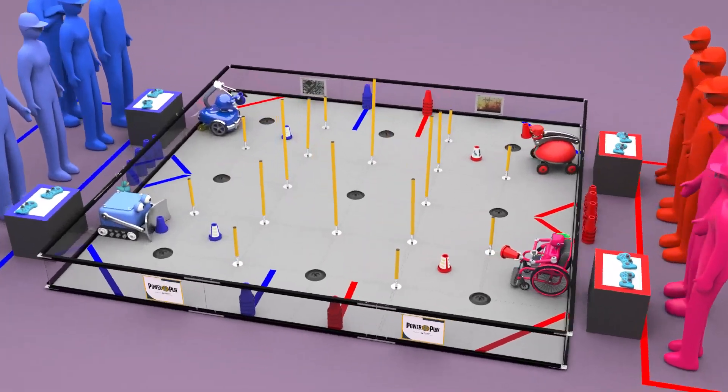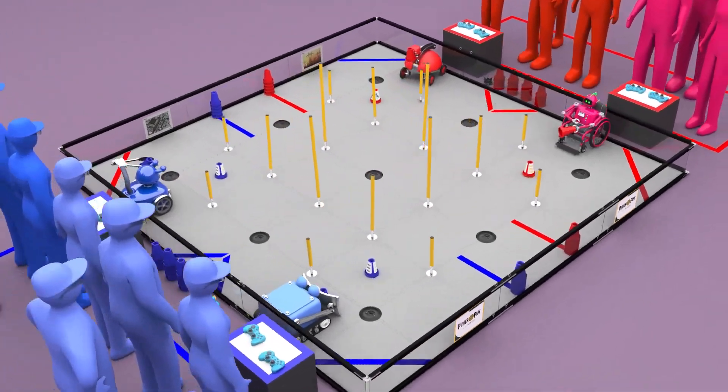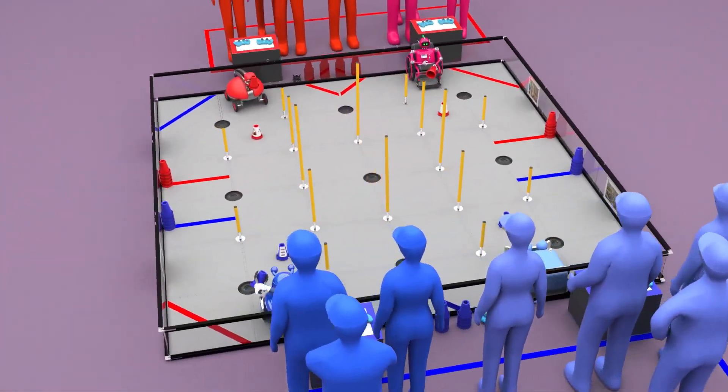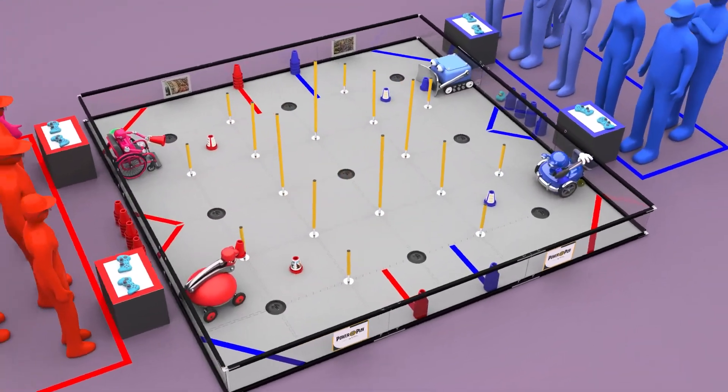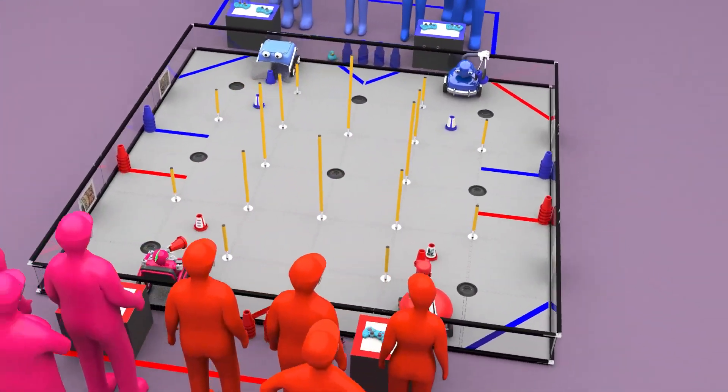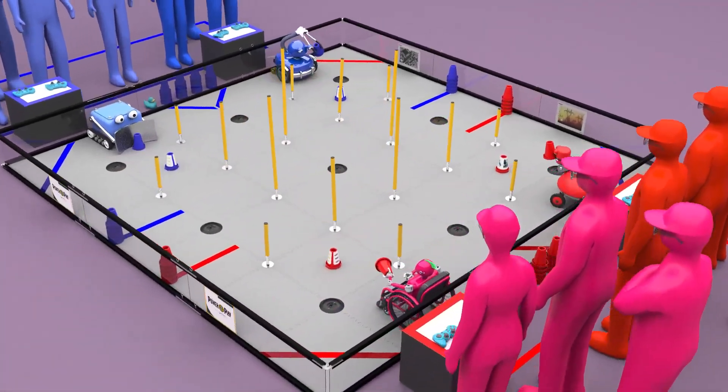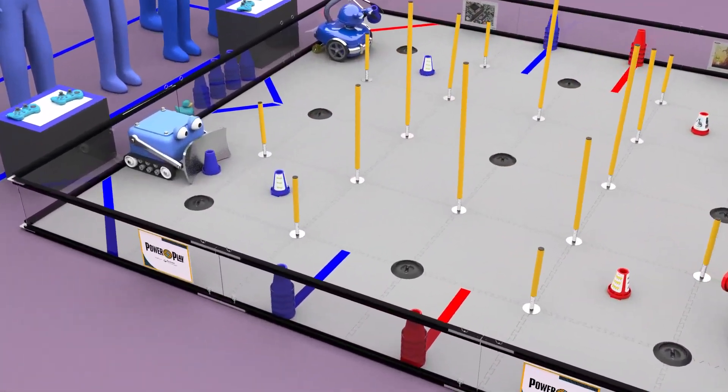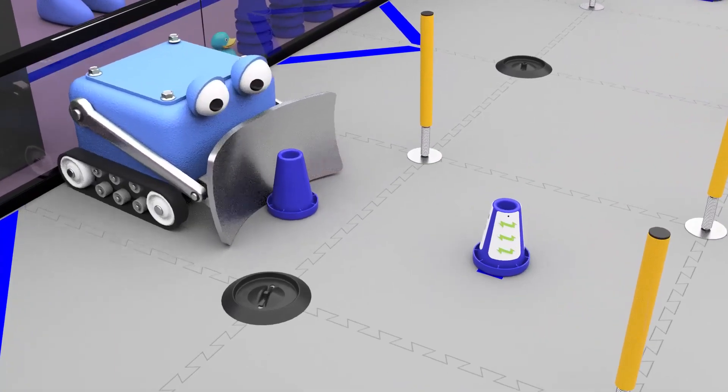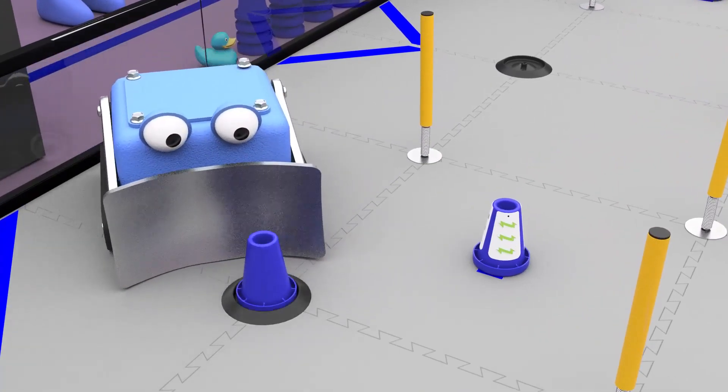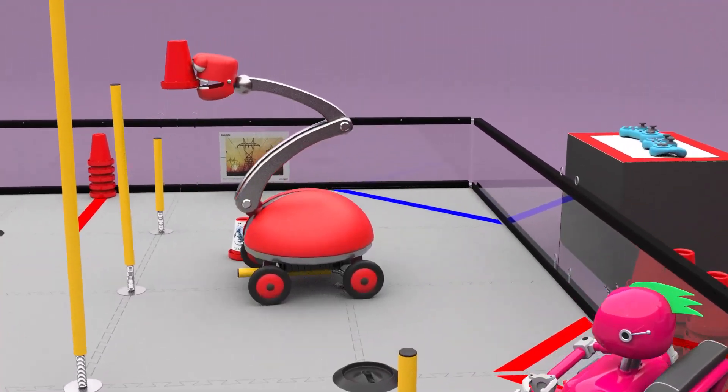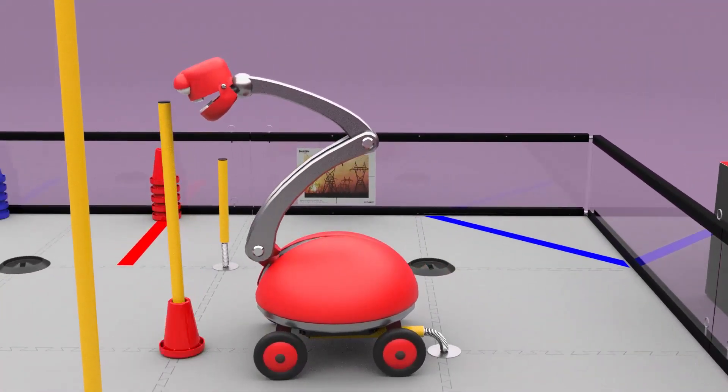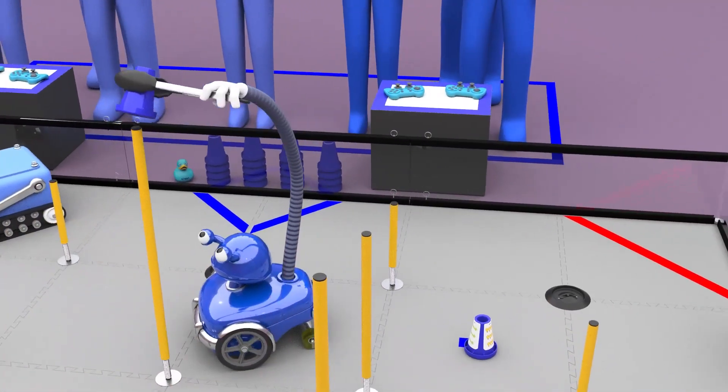The match begins with a 30-second autonomous period. During this period, there are a number of ways for teams to score, using only pre-programmed instructions and sensor inputs. Each cone secured on a junction earns points. Two points for the ground junction, three points for the low junction, four points for the medium junction, and five points for the high junction.